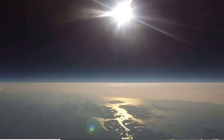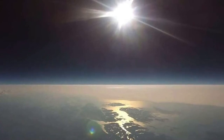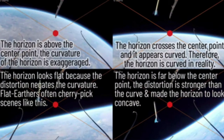So where do flat earthers go wrong in images like this? As I explained earlier, the center of the frame is above the horizon. That's going to make the horizon look more concave than it really is, which basically takes away the curvature. This really drives the point home visually. It's real simple — even if you're using a fisheye lens, a straight line will remain straight if it crosses the image's center. We can use this attribute to determine if a line is straight in reality. Here's how you get the fakery — you can see in this bottom-left image that the horizon looks flat because the distortion negates the curvature. Flat earthers cherry-pick scenes like this.